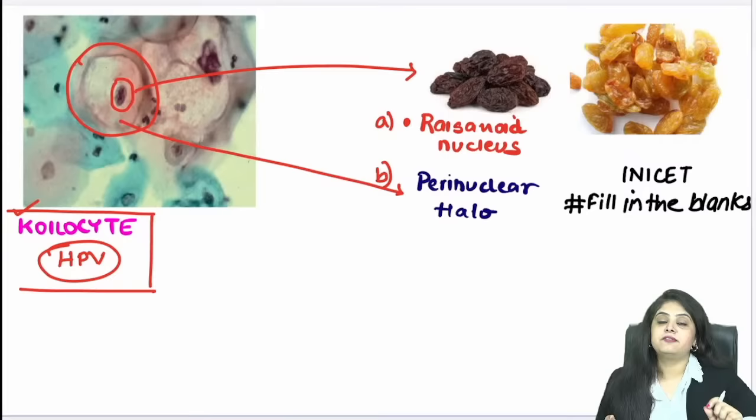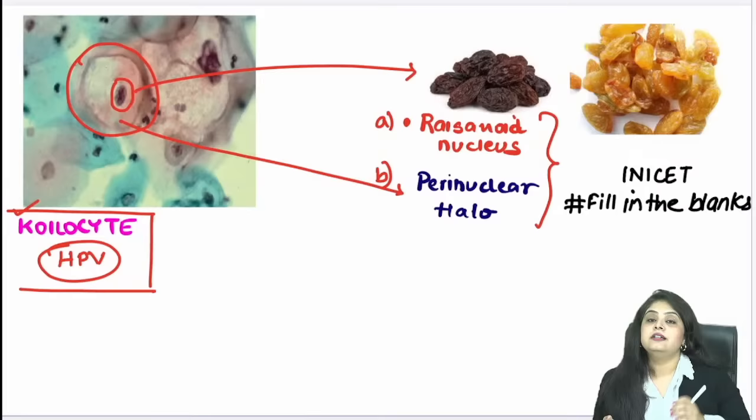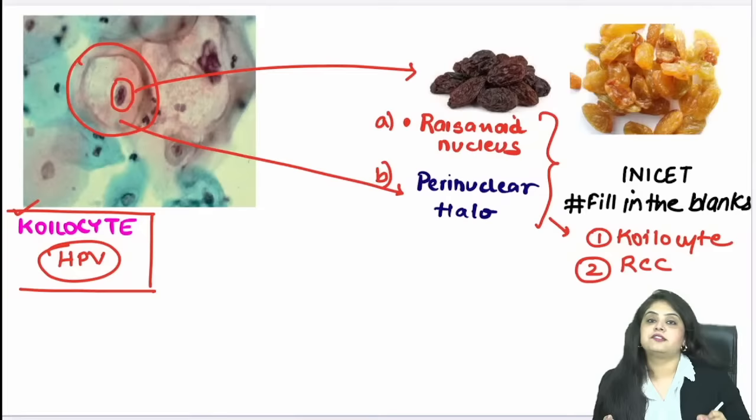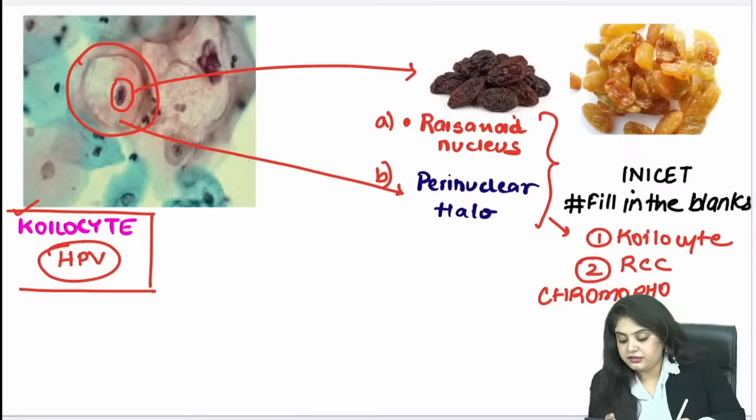For INICET students: the same findings — raisinoid nucleus with perinuclear halo — are also seen in a renal cell carcinoma. Which RCC? It is chromophobe RCC. So koilocyte shows raisinoid nucleus and perinuclear halo, and chromophobe RCC shows the same appearance.